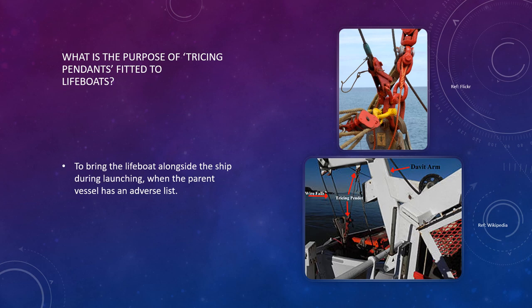The last question: what is the purpose of tricing pendants fitted to lifeboats? Two pictures are provided — a close-up of the tricing pendant and its position relative to davit-launched lifeboats. The purpose of tricing pendants is to bring the boat alongside the ship during launching. When lowering from the stowed position to the embarkation deck, the boat may swing outward; the tricing pendants bring it back close to the embarkation deck for safe boarding. This is especially important if the parent vessel has an adverse list, ensuring safe embarkation during any abandon-ship procedure.